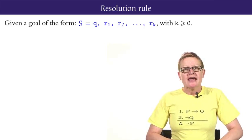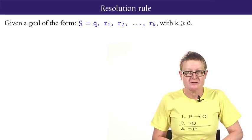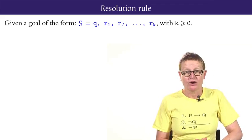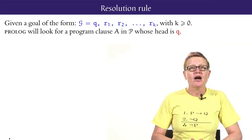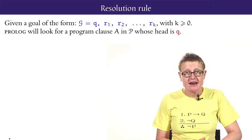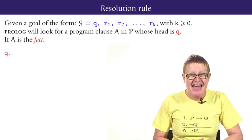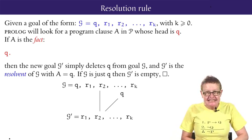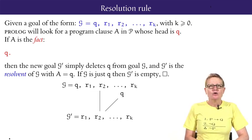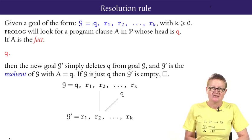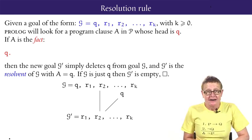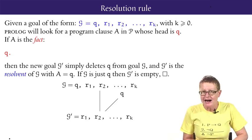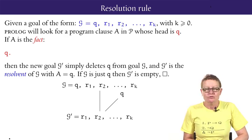The resolution rule works even more simply in the case of fact clauses in logic programs. Again, if we start with a goal G whose first atom is Q and perhaps has some other atoms following, and Prolog will look for a program clause A in P whose head is Q. If A is simply the fact Q, then the new goal G prime is obtained by simply deleting Q from G. Again, the new goal G prime is called the resolvent of G with clause A. And now the first atom is R1, if there is one. In the case that G is just Q alone and there are no R's, then G prime is the empty goal square.